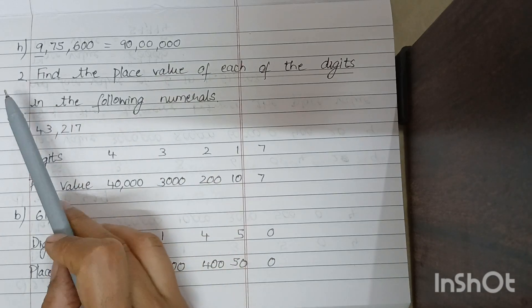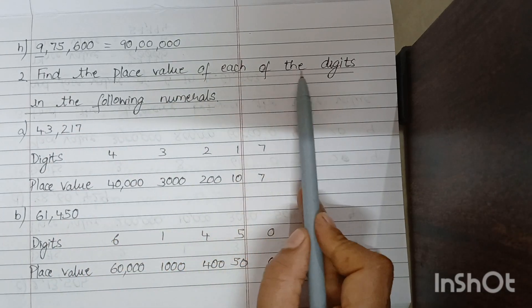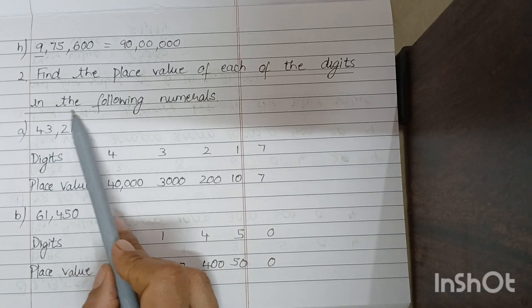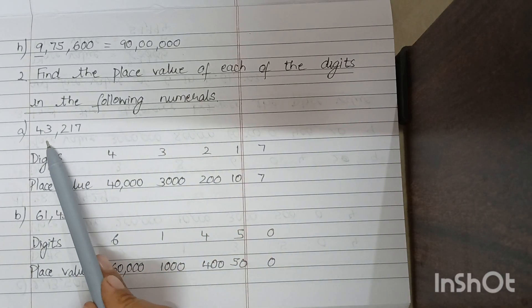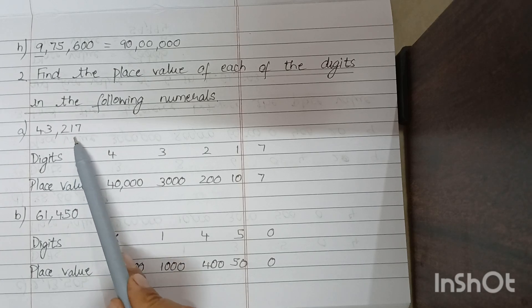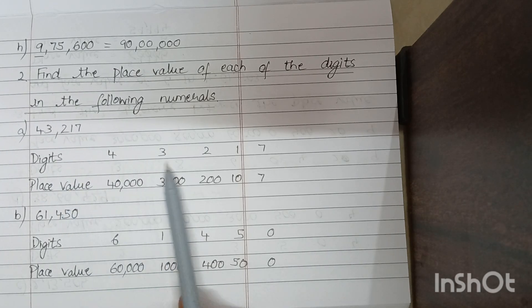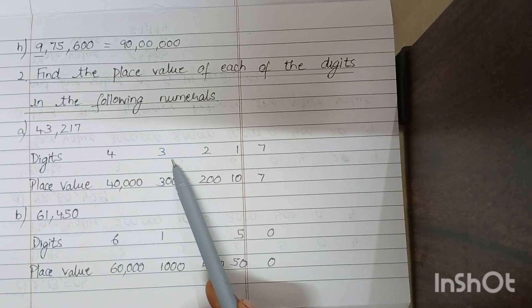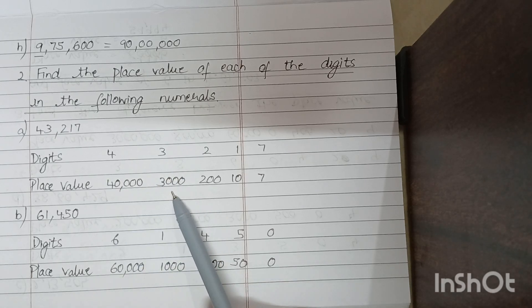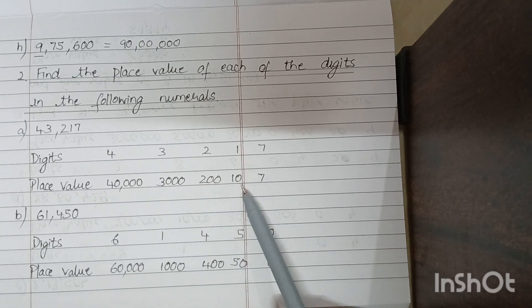Find the place value of each of the digits in the following numerals. A. 43,217. Place value: 40,000, 3,000, 200, 10, 7.